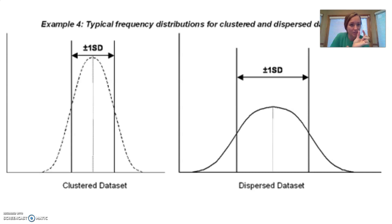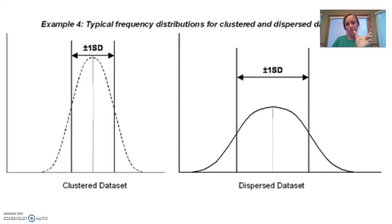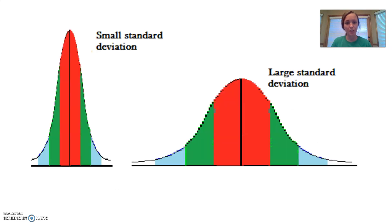Each standard deviation might not span as many points. For IQ, one standard deviation is 15 points, whereas a larger data set might have a wider standard deviation. What you need to know is that standard deviation is the spread of your data points. I hope that is helpful — good luck!